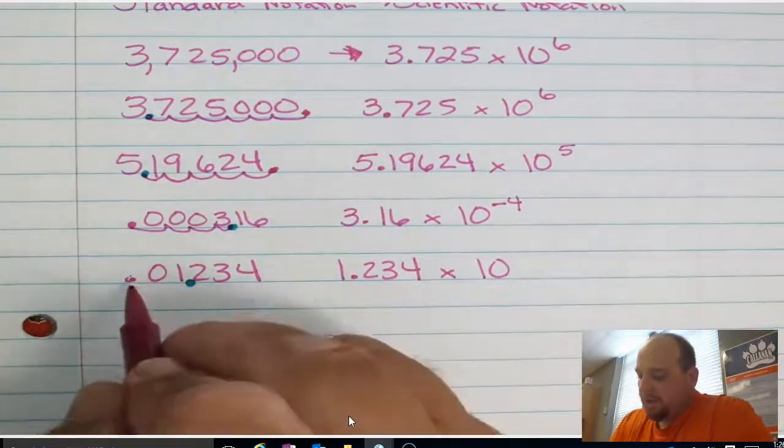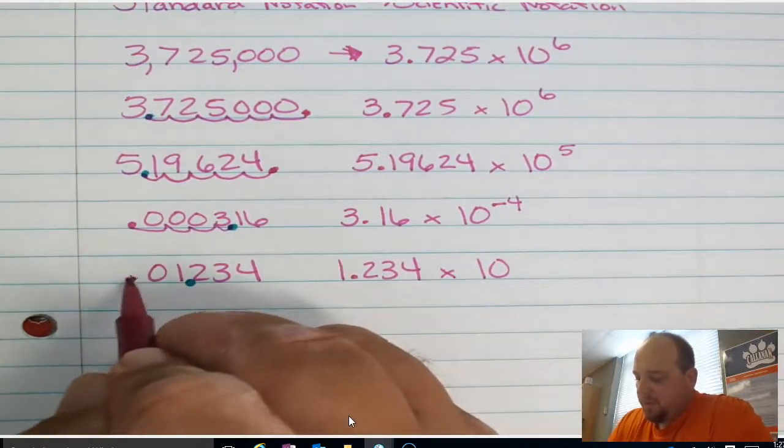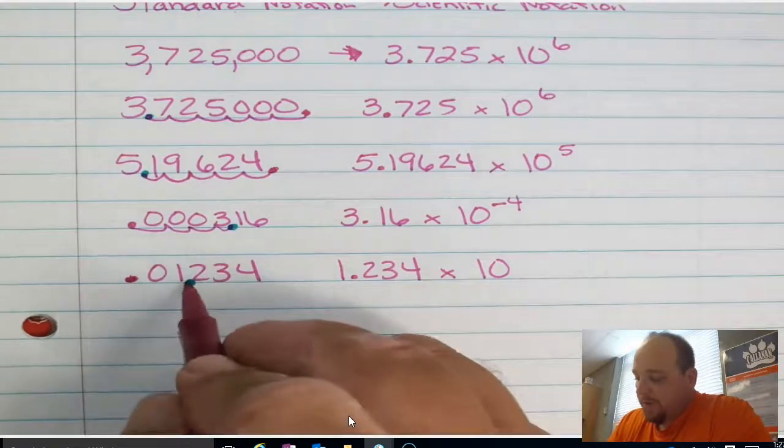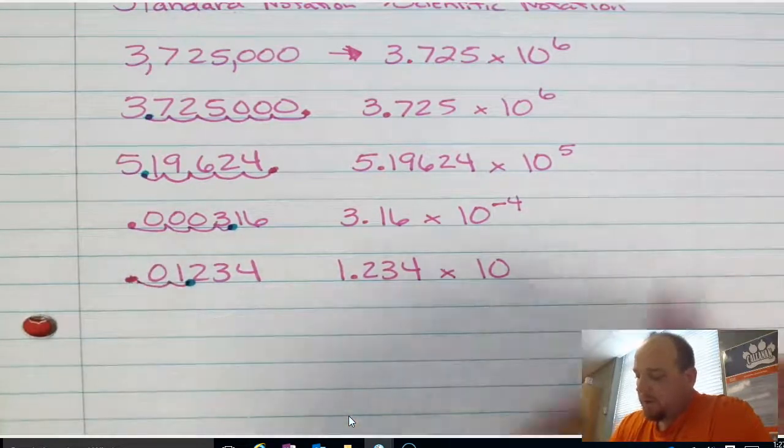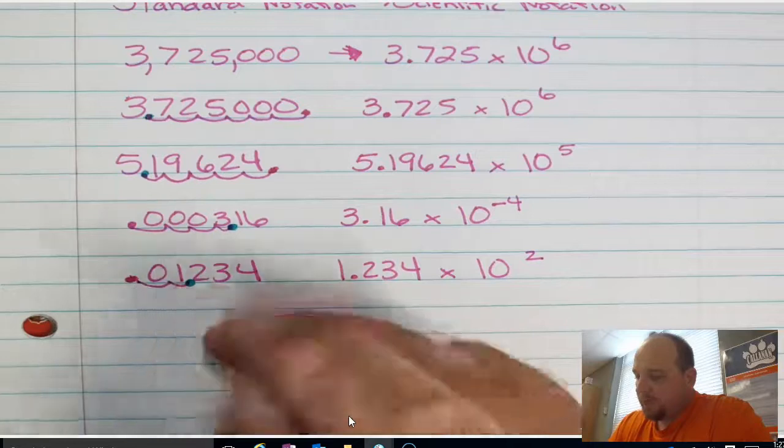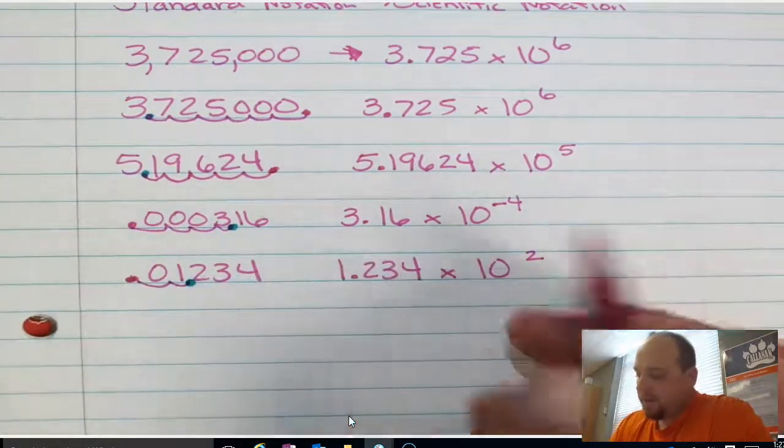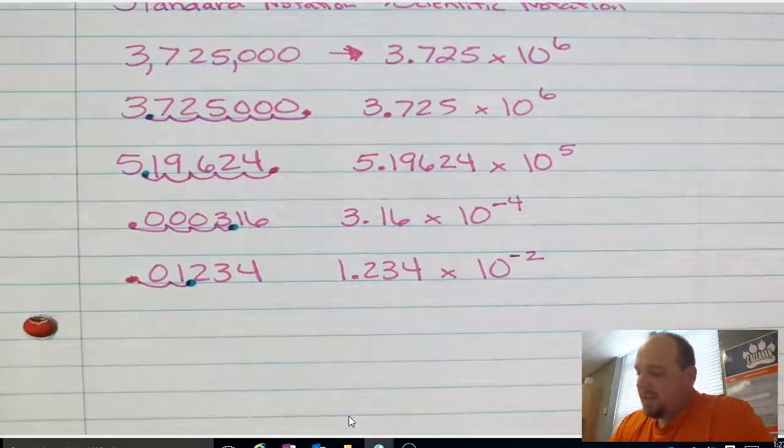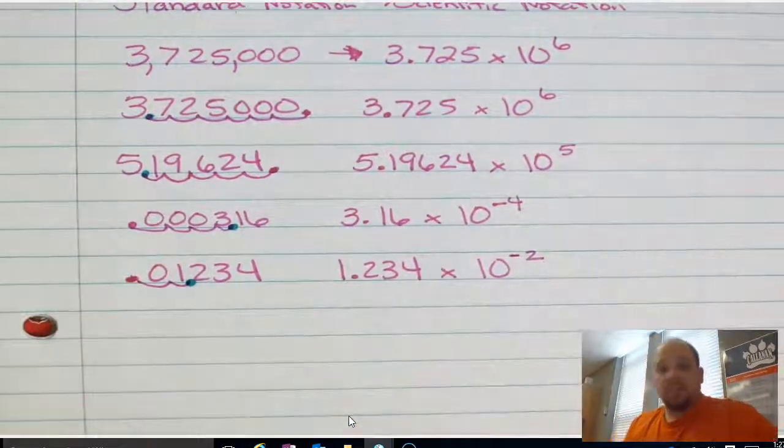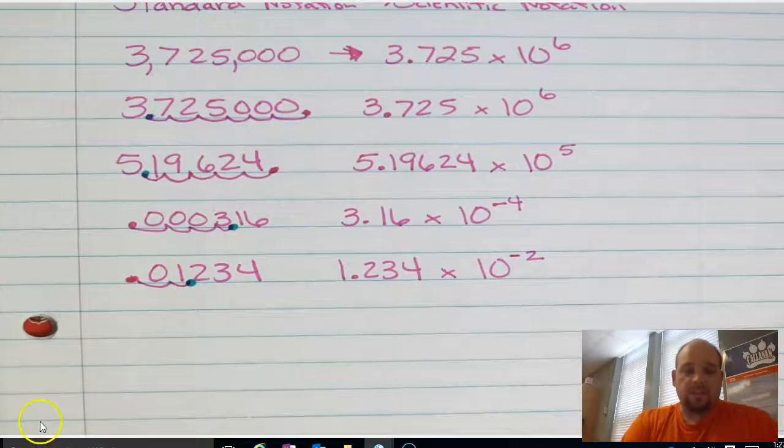So I'm going to count how many spots that moved from the blue to the red. One, two. It moved two spots. And I know that it moved to the left. And I also looked at my original number. It was a decimal that was less than 1. As a result, I know this is a negative exponent. Good luck changing your numbers from standard notation to scientific notation.